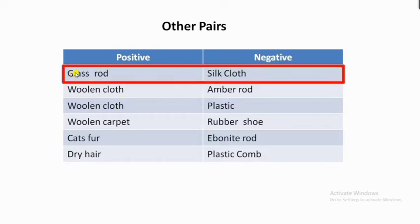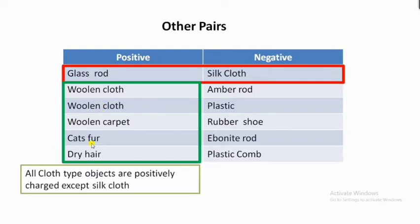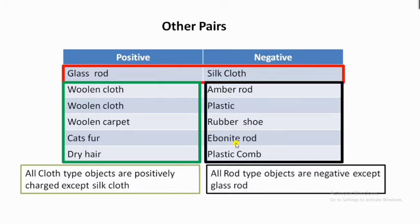To memorize the table: glass rod is positive and silk cloth is negative. On one side, silk cloth is the only cloth that is negative — all other cloth-type objects (woolen cloth, woolen carpet, cat's fur, dry hair) are positive. On the other side, glass rod is positive but all other rod-type objects (amber rod, plastic, rubber, ebonite) are negative. So only in the glass rod and silk cloth pair does the cloth get negative; in all other pairs, cloth-type objects are positive and rod-type objects are negative.